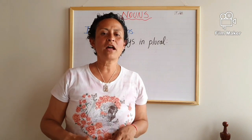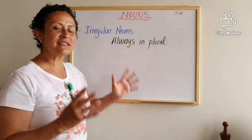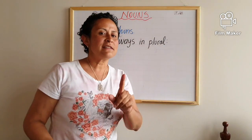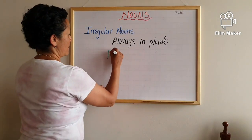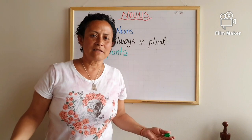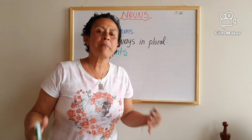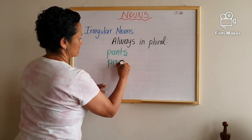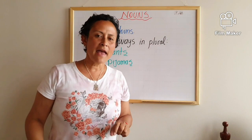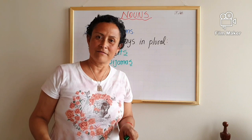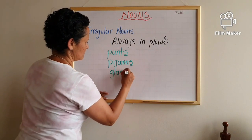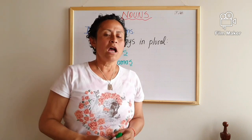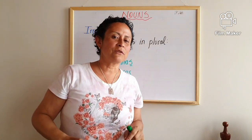The second group of irregular nouns is special because these nouns are always in plural form — you will never see them in singular. For example: pants — you don't say pant, you say pants. Pajamas — you don't say pajama. And glasses — not referring to a glass of water, but the glasses you wear on your face. These nouns exist only in plural form.